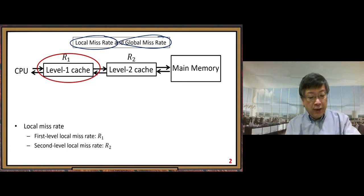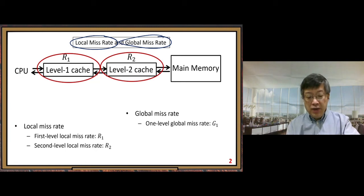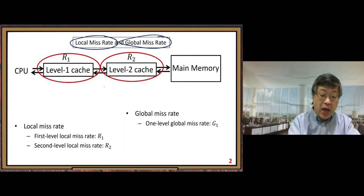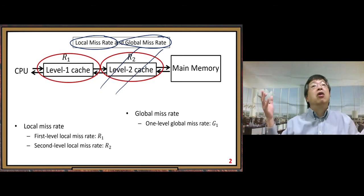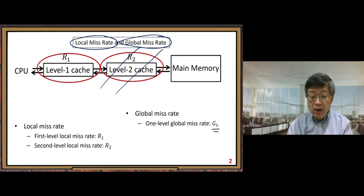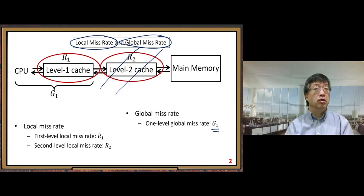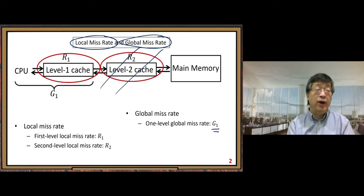After local miss rates, we have the global miss rate concept. The one-level global miss rate g1 means: if you do not use level two cache and only have one level, what is your global miss rate? That g1 happens to equal r1, because if you remove L2 cache, g1 and r1 are the same. Even if you put L2 cache in, if we only look at the one-level perspective, g1 and r1 are the same.